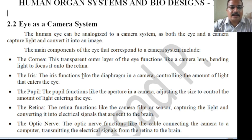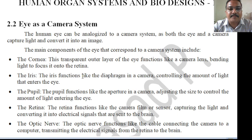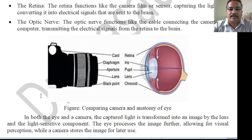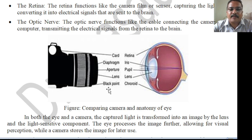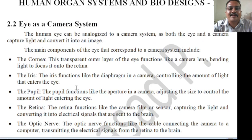The human eye can be an analogy to a camera system. Both the eye and camera capture light and convert it into an image. A camera has a diaphragm, aperture, lens, and a black body — all of which are also present in our eye system. Based on our eye system, the camera system was developed.